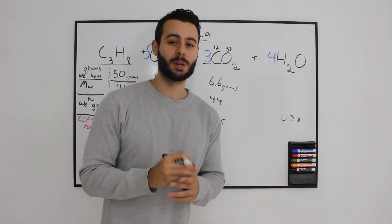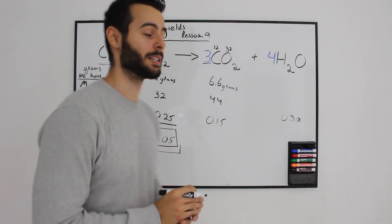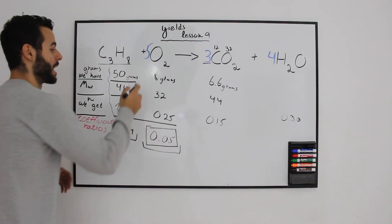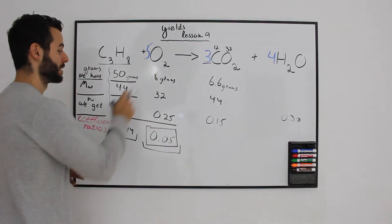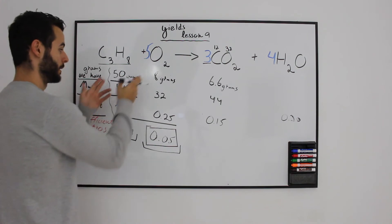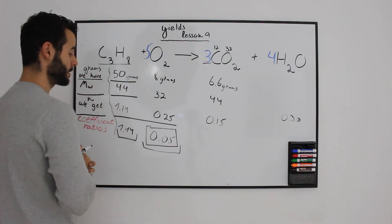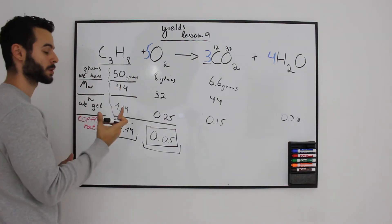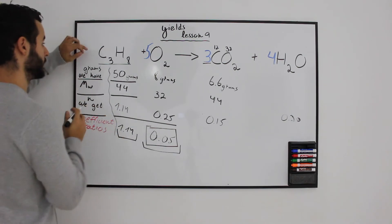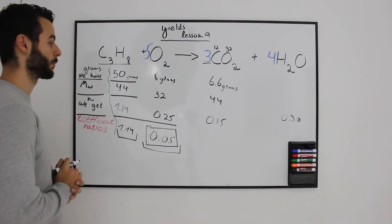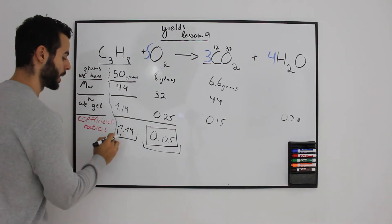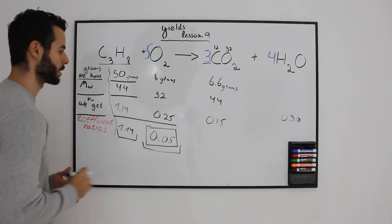Let me recap the entire video. We have 50 grams of propane; the molecular weight of propane is 44. Dividing grams by molecular weight gives us the actual moles — 1.14 moles. The coefficient of propane is 1, so dividing by 1 gives us a coefficient ratio of 1.14.